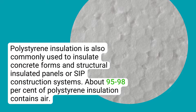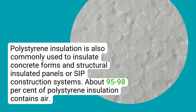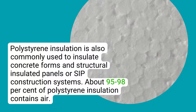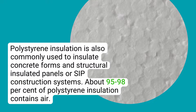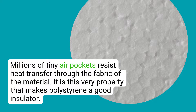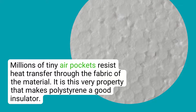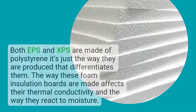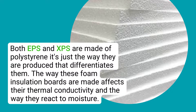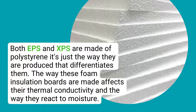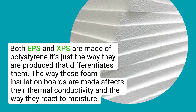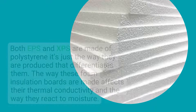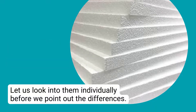What makes polystyrene a good insulator? Polystyrene is a colorless transparent thermoplastic used in the manufacture of polystyrene beads and foam insulation boards. Small polystyrene beads can also be used as cavity wall insulation, poured in loose to fill the cavity. Polystyrene insulation is also commonly used to insulate concrete forms and structural insulated panels, or SIP construction systems. About 95 to 98 percent of polystyrene insulation contains air — millions of tiny air pockets resist heat transfer through the fabric of the material, which is what makes polystyrene a good insulator. Both EPS and XPS are made of polystyrene; it's just the way they are produced that differentiates them.